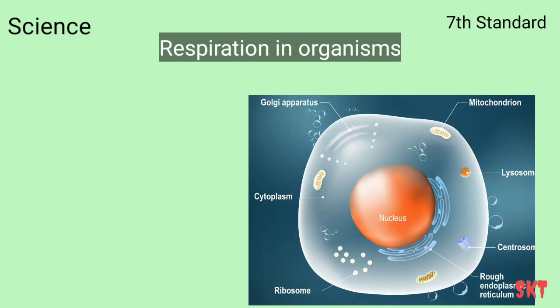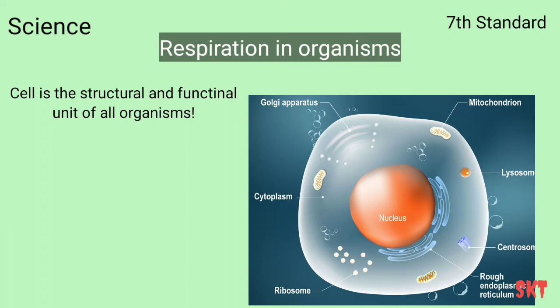You may have studied in previous classes that a cell is the smallest structural and functional unit of an organism. Our body is made up of trillions and billions of cells, so each cell has to respire to survive. We eat food for energy, but to convert food into energy we need oxygen, and to get oxygen we need to respire. When a cell respires, that is called cellular respiration.